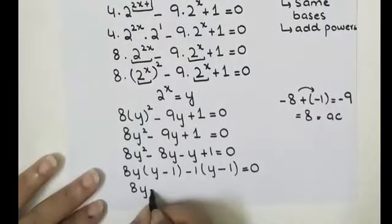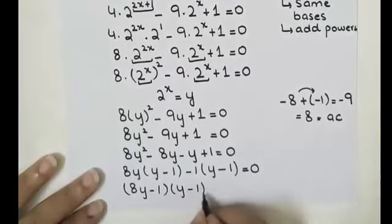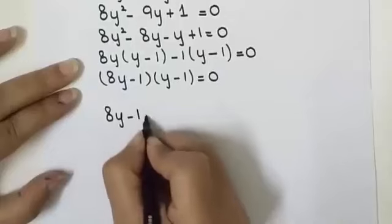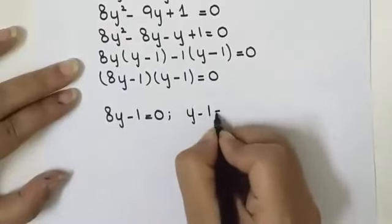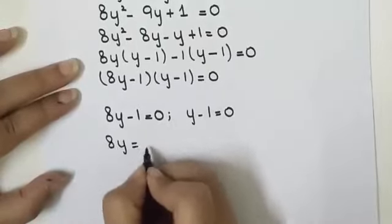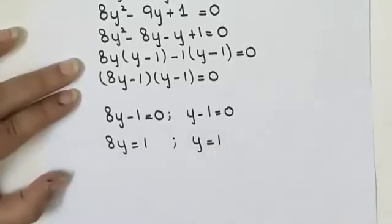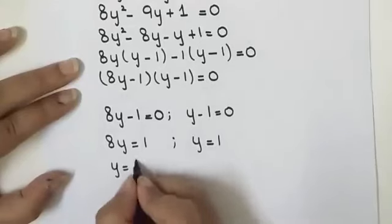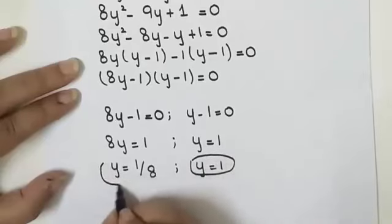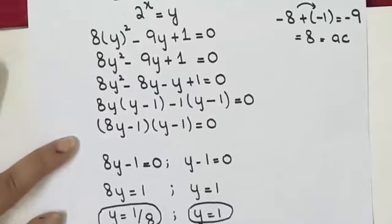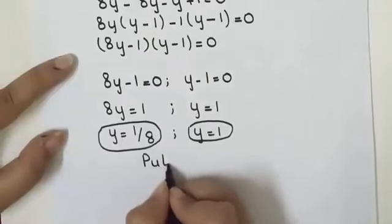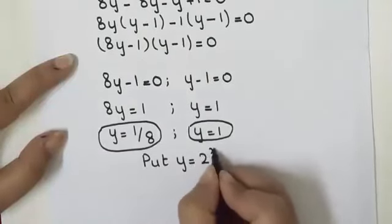So we have (8y - 1)(y - 1) = 0. Either 8y - 1 = 0, giving y = 1/8, or y - 1 = 0, giving y = 1. These are the two values of y. Since y = 2^x, we now substitute back: 2^x = 1/8 and 2^x = 1.